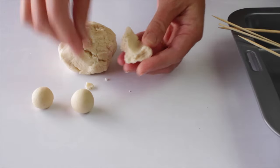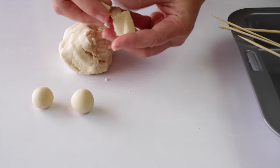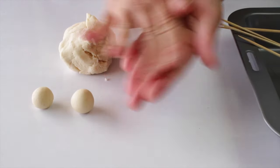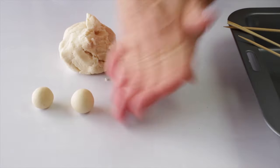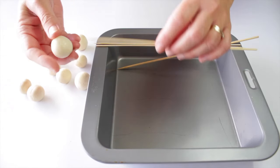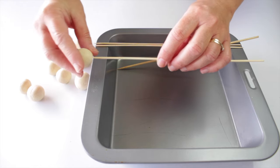Take a small amount of dough and roll it into a ball. Push a wooden skewer through the balls and place them on a baking tin.